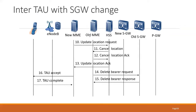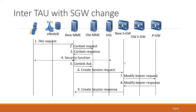Then the routine update location to HSS informs the new MME; cancel location removes the information of the old MME; and update location acknowledgement acknowledges this along with subscription information. Since the old MME and old SGW are no longer used, a delete bearer request is sent to remove any bearer between them. Then the new MME sends a tracking area update accept message assigning a new GUTI, and the UE sends a tracking area update complete message.